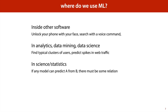And finally, we can use machine learning in science and statistics. In this case it's not so much the model that is of interest to us, but the fact that there exists a model that allows us to predict A from B. Because if that's the case, and the relation is not spurious, then there must be some relation between A and B, which we can then investigate further.